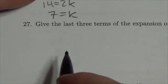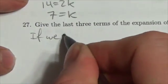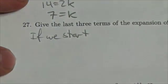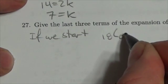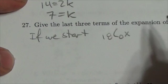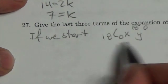That's kind of an interesting question. Now, if we assume that we start like this: 18 choose 0, x to the 18, y to the 0. If we start here,